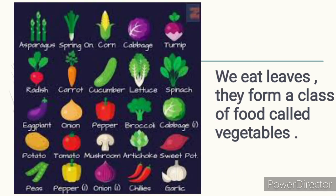Did you know we eat leaves? They form a class of food called vegetables. Can you see the picture of different vegetables? Carrots, cucumber, lettuce, spinach, pepper, onion, tomato, potato, pea — all these are examples of vegetables. And I know you like to eat them too. Do you like to eat cabbage? I love cabbage too!